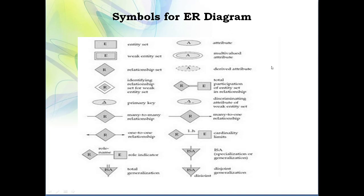Next, we look at the symbols used to draw an ER diagram. Basically, we use three main symbols. A rectangle is used to represent an entity. A diamond is used to represent a relationship between two entities. An ellipse is used to represent an attribute. These are the three main symbols used while drawing ER diagrams.